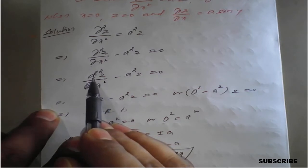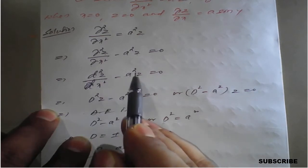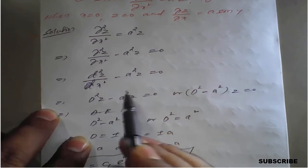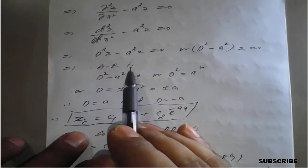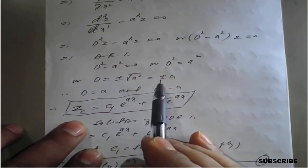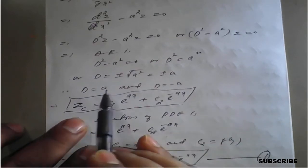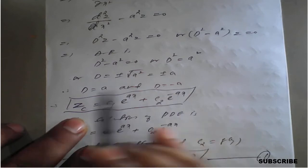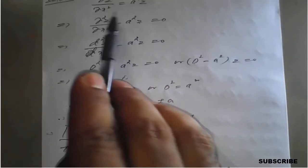This can be written in ordinary differential equation form as d²z/dx² = a²z. Simplify and get the auxiliary equation. From the auxiliary equation, the roots are d = +a and d = −a.